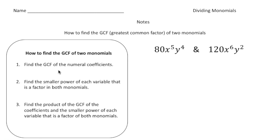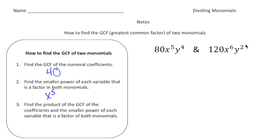I've given you a three-step process to follow. Step one: find the greatest common factor of the numeral coefficients. Here we have 80 and 120, and 40 is going to be the greatest common factor. Step two: find the smaller power of each variable that is a factor in both monomials. We have x to the fifth and x to the sixth — x to the fifth has the smaller power, so we take x to the fifth. We also have y to the fourth and y squared — we take the smallest power, which is y squared.